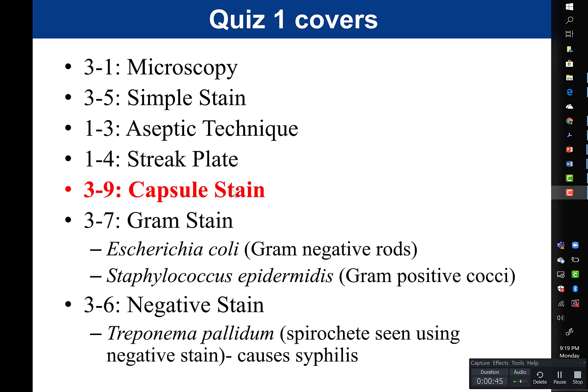For the gram stain, there are two organisms listed: Escherichia coli, an example of a gram-negative rod bacteria, and Staphylococcus epidermidis, an example of a gram-positive cocci. So for the gram stain, you should be able to recognize an example organism that would be gram-positive and one that would be gram-negative. For the negative stain, you will need to know Treponema pallidum — a spirochete seen using a negative stain that causes syphilis — as an example organism.